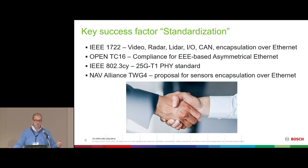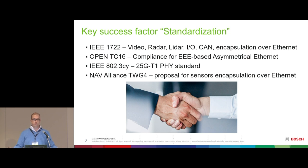For the backbone link, 25 Gig is very likely and standardization is important here too. We may also see data rates beyond 25 Gig. Bosch is evaluating optical solutions, but we are strong believers that when copper solves the problem, we stick to copper. NAFI Alliance TVG4 is also discussing heavily how sensor applications and data encapsulation can be done.